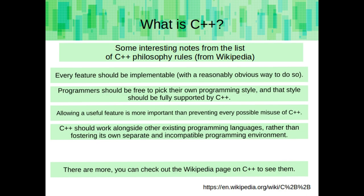Here are some interesting notes from the list of C++ philosophy rules from Wikipedia. Every feature should be implementable with a reasonably obvious way to do so. Programmers should be free to pick their own programming style, and that style should be fully supported by C++. Allowing a useful feature is more important than preventing every possible misuse of C++. C++ should work alongside other existing programming languages, rather than fostering its own separate and incompatible programming environment. There are more, and you can view them at Wikipedia if you'd like.